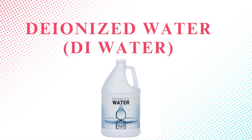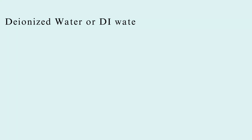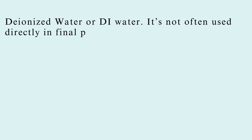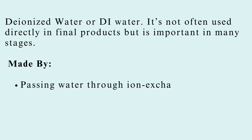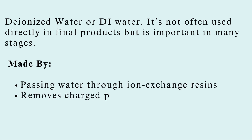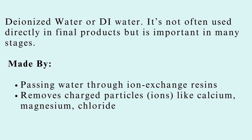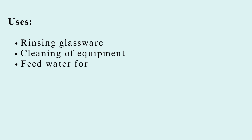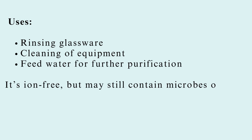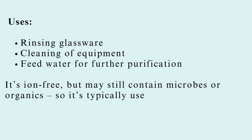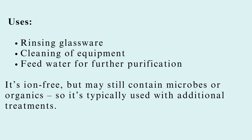Deionized water, or DI water, is not often used directly in final products but is important in many stages. It's made by passing water through ion exchange resins, which removes charged particles — ions like calcium, magnesium, and chloride. Uses include rinsing glassware, cleaning of equipment, and as feed water for further purification. It's ion-free, but may still contain microbes or organics, so it's typically used with additional treatments.